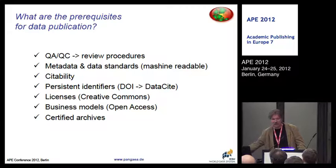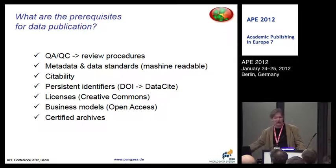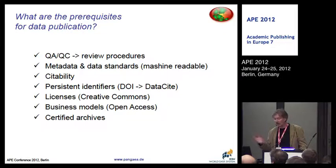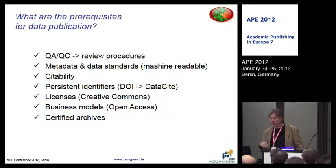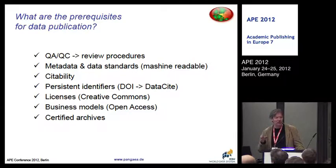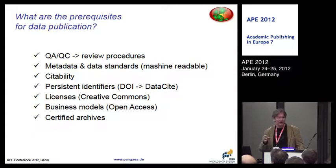Then the citability — we need to have citation standards for that. Persistent identifiers, as outlined by Jan. Licenses — licenses are also necessary. PANGAEA uses the CC-BY license mostly. And then, this is also often forgotten, we need to have business models for running those data centers which are able to cope with data publication in the future.